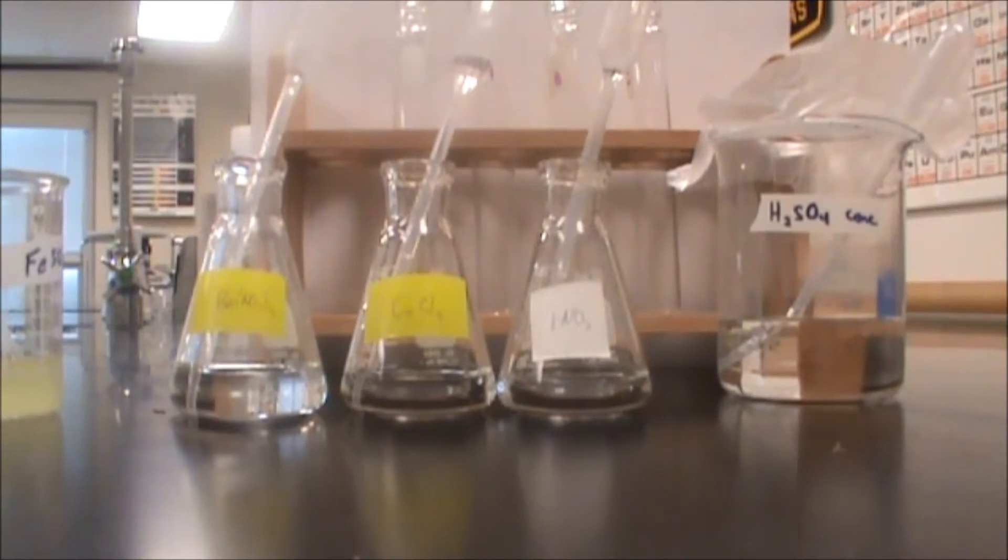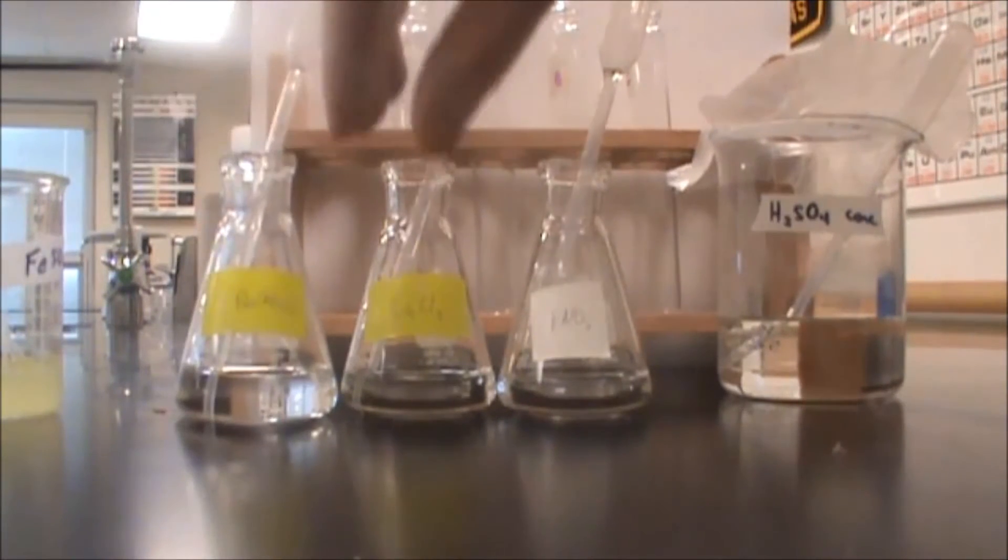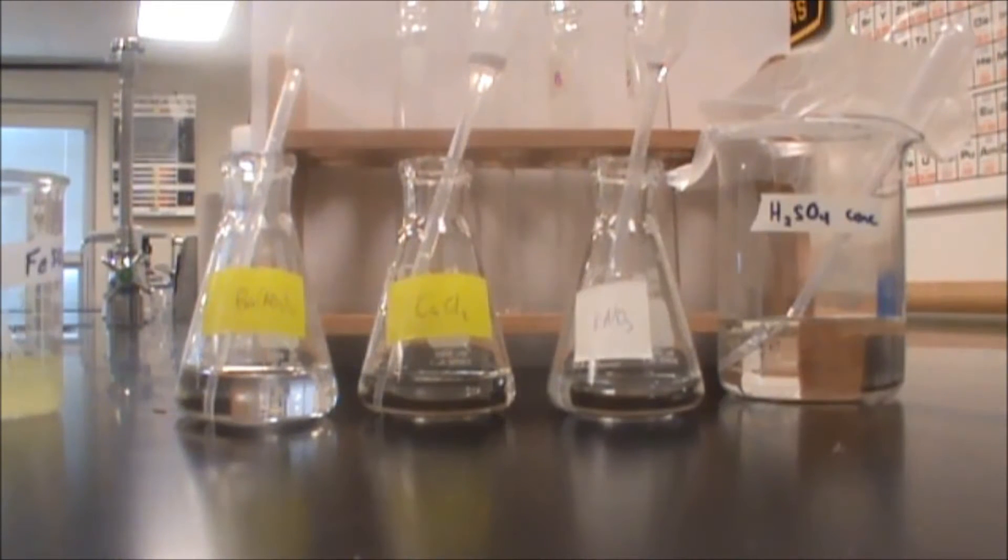So if you're doing the qual lab, this is how you would do the nitrate test. I'm going to do the nitrate test on three different things: barium nitrate, calcium chloride, and potassium nitrate, and show you how to figure out if you have a nitrate for your unknown.